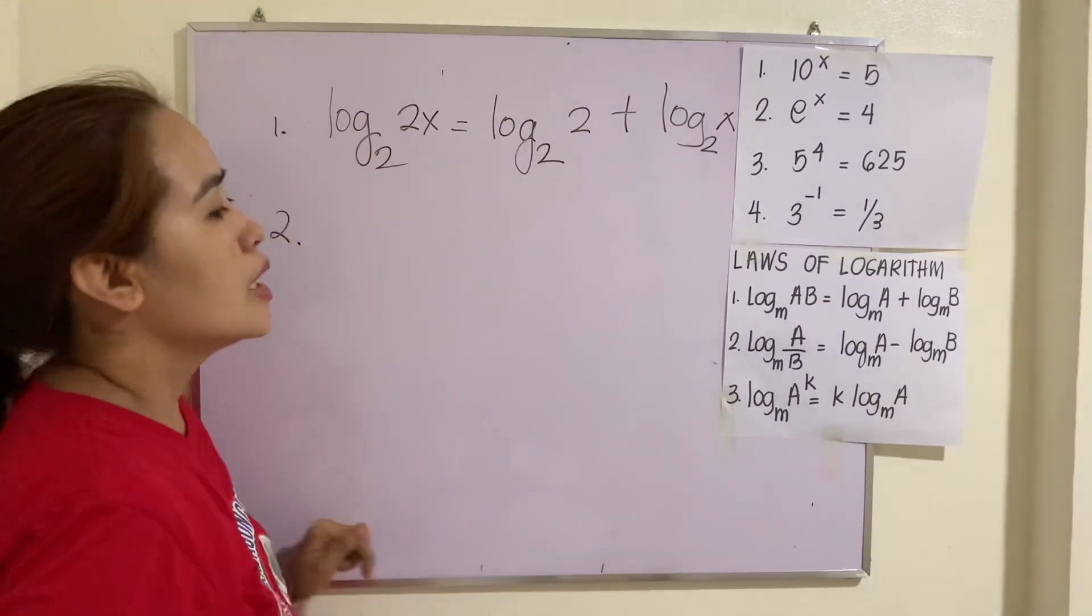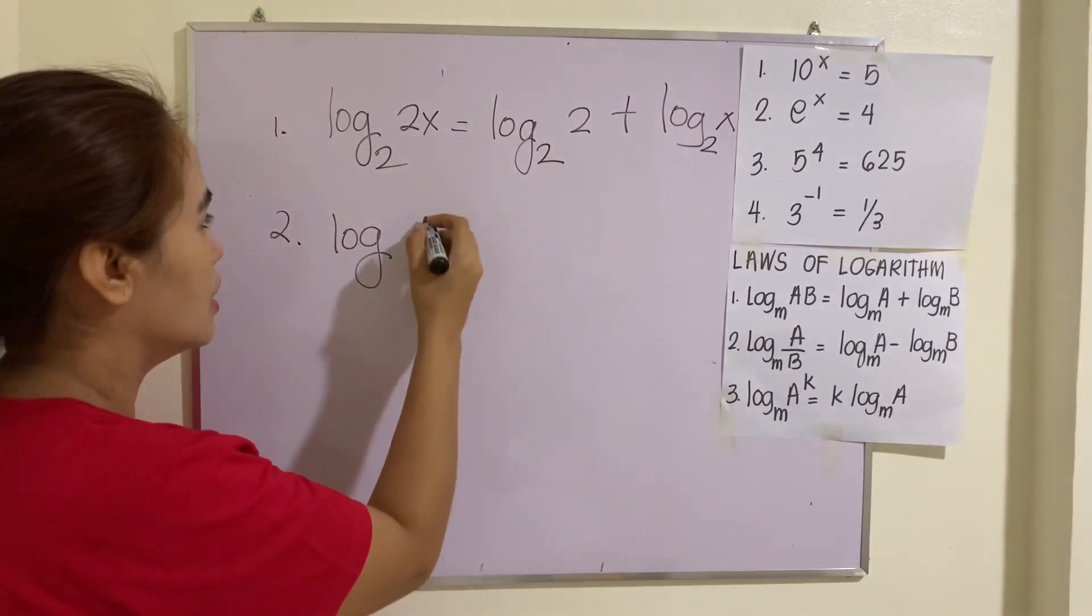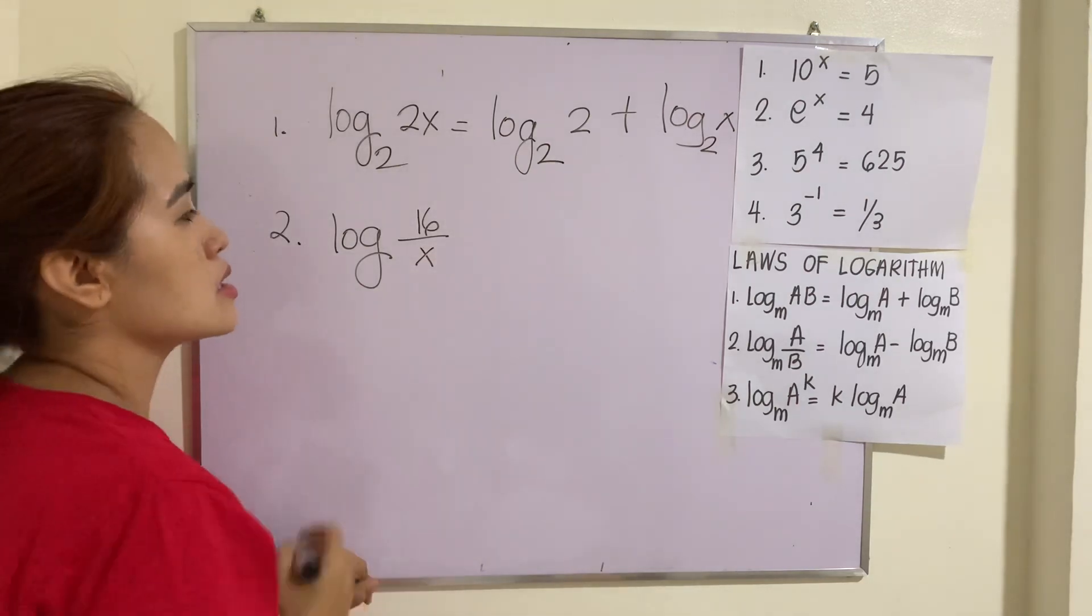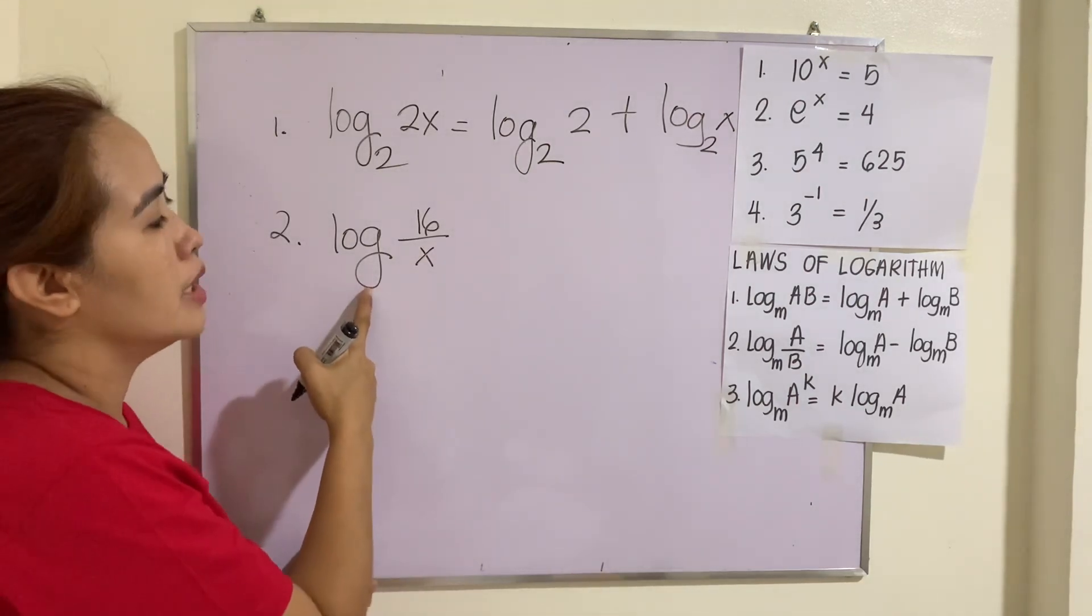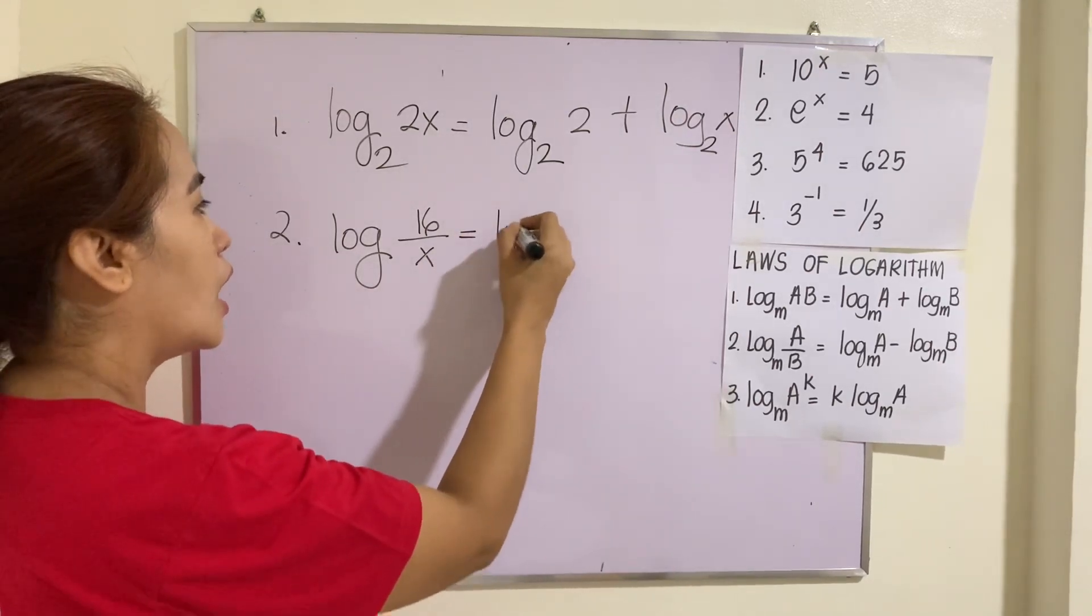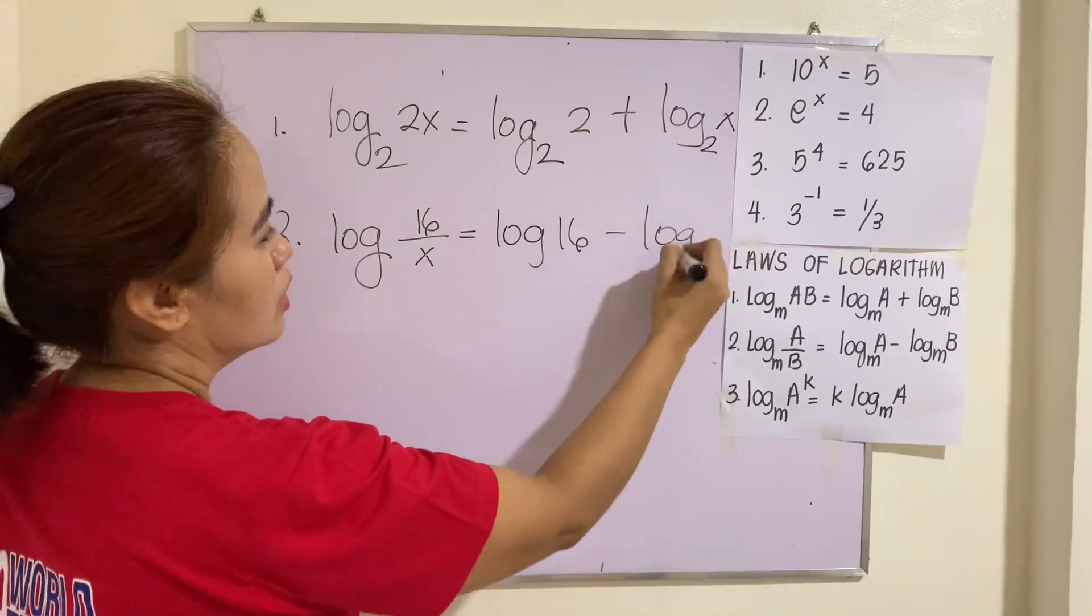Number 2. The second one is log of quotient. Suppose you have log of, let's say, 16/x. There's no base here meaning the base is 10. This is a common logarithm. This is log 16 - log x. That's the application of number 2 law.